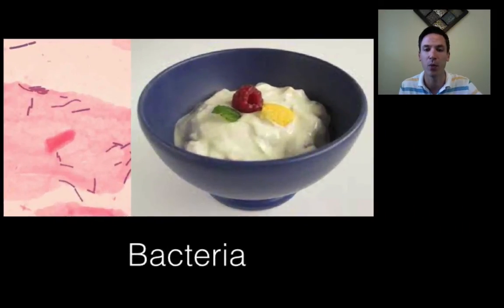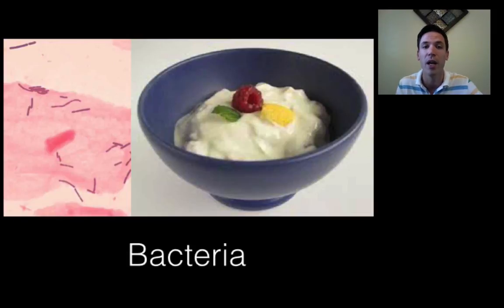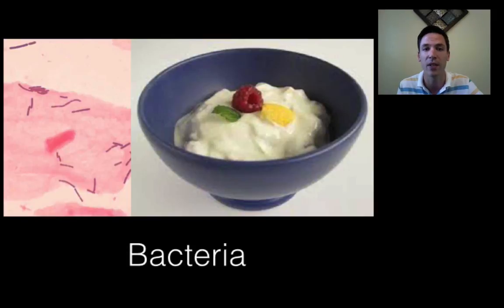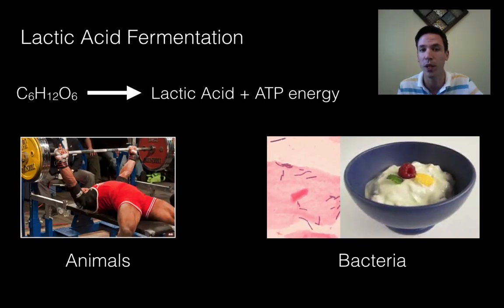We also see lactic acid fermentation in bacteria. An example is the bacterium Lactobacillus, which we use to create yogurt. They're placed in milk, where they break down lactose — a sugar in milk — and produce lactic acid, which causes the milk to curdle. That's essentially how we get yogurt. So you've seen lactic acid fermentation before, whether it's in the yogurt you eat or in the exercising that you do.